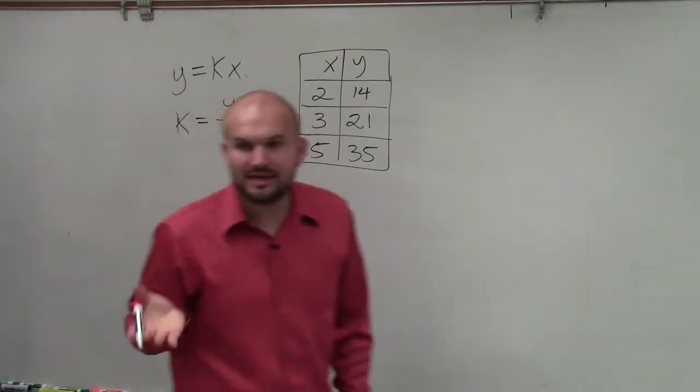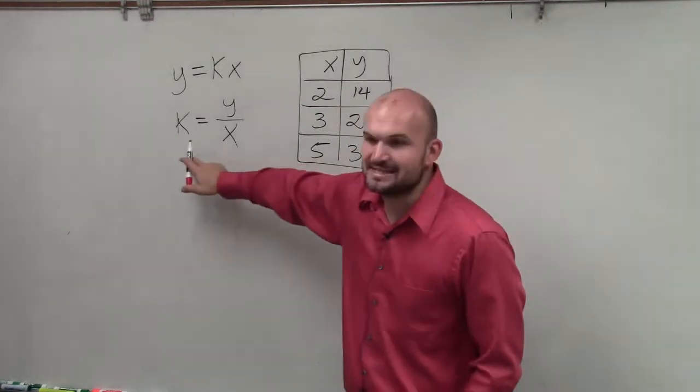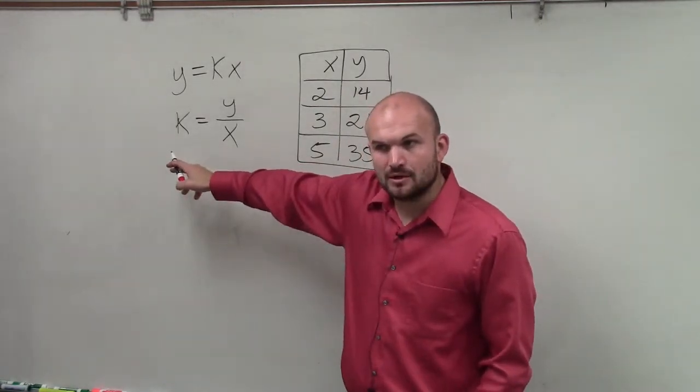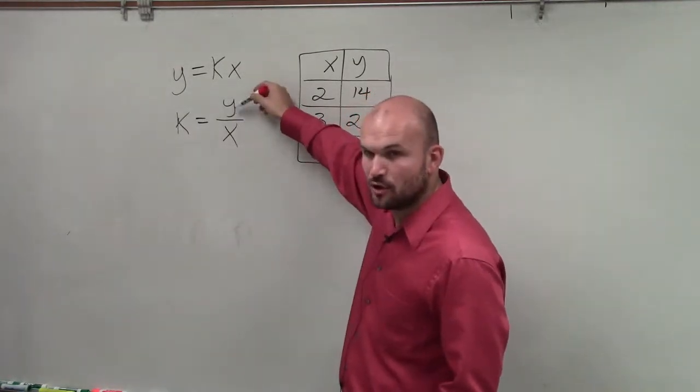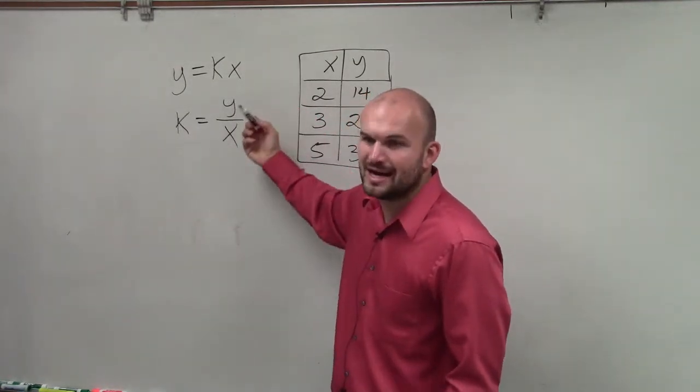So to determine if something is in direct variation, we have a constant value, k. If we don't have a constant value k, which is the ratio of y over x, then we do not have direct variation.